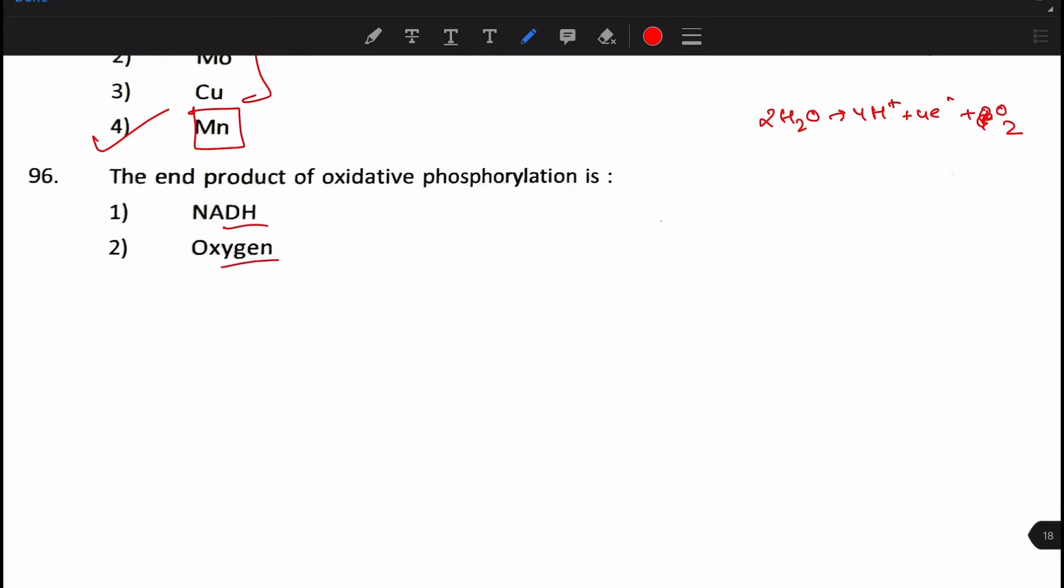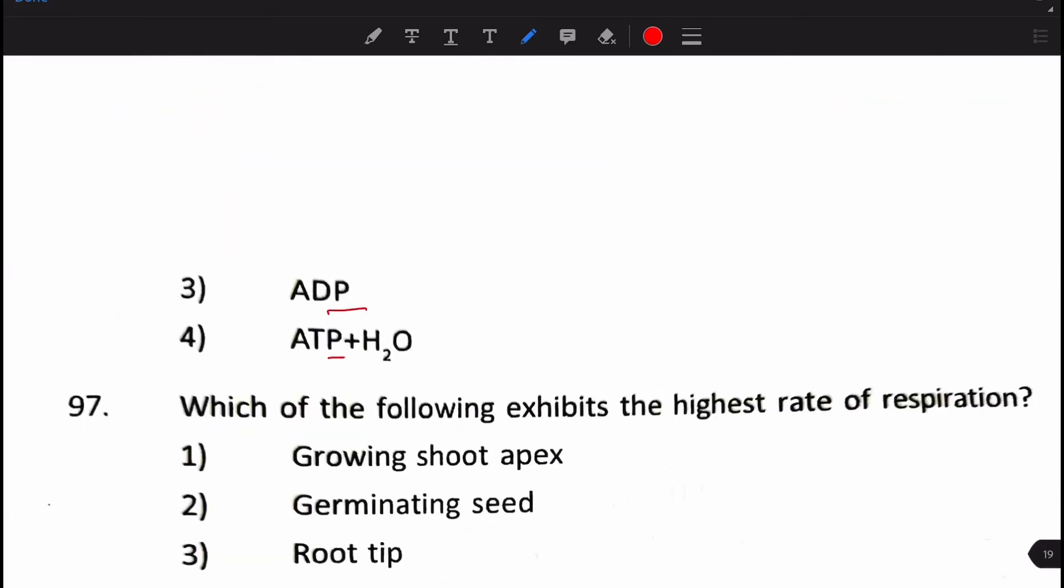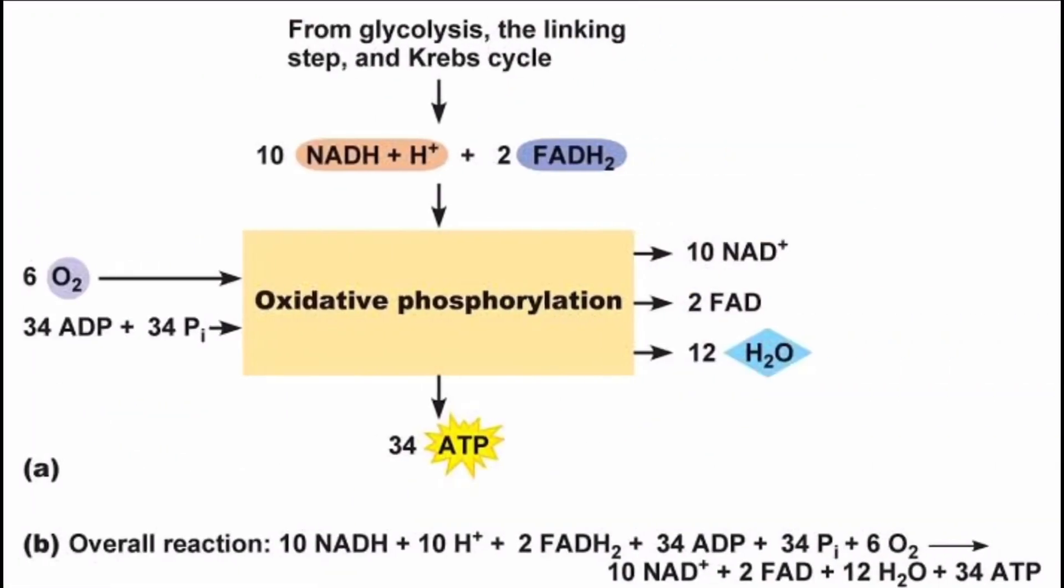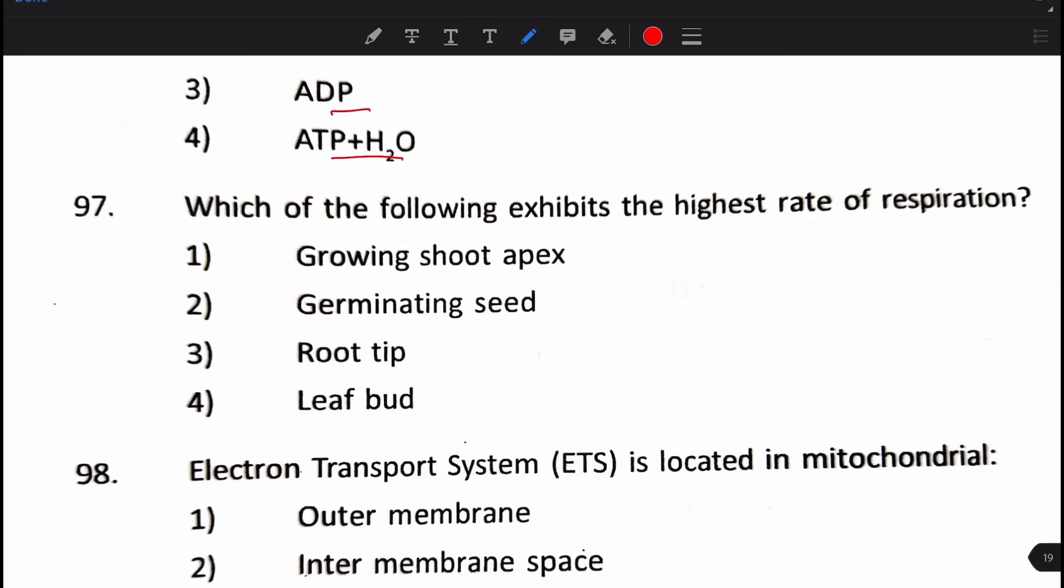Next is the end product of oxidative phosphorylation is? Very important question. The option is NADH, oxygen, ADP, and ATP plus H2O. We will refer a picture over here. So, from this image, we could see that in the Krebs cycle and in glycolysis, what were the end products? And this NADPH, when they enter the oxidative phosphorylation, they convert into NADP and stuff. But, in the end product, the ATP and H2O is released. So, our answer was number 4.